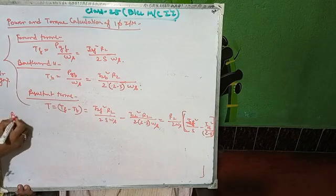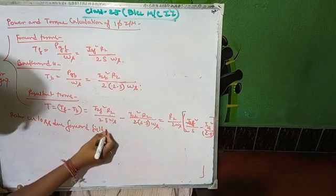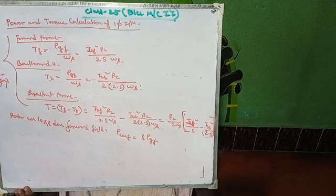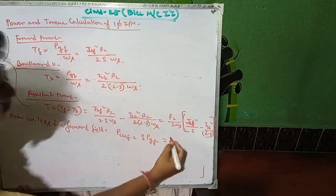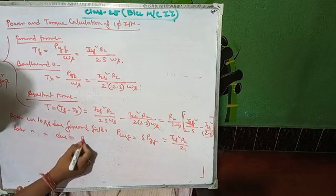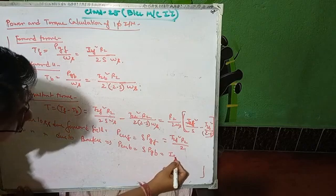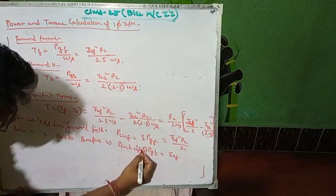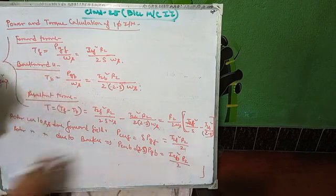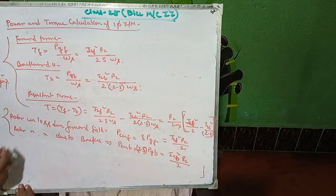Next, rotor copper loss due to the forward field: P_cuf equals s times P_gf, which simplifies to I2f squared times R2 by 2. Rotor copper loss due to the backward field: P_cub equals (2 minus s) times P_gb, which gives I2b squared times R2 by 2. The magnitudes are the same if I2f and I2b are equal.